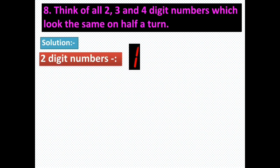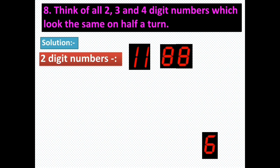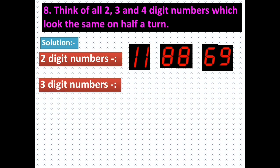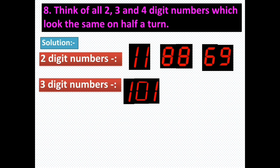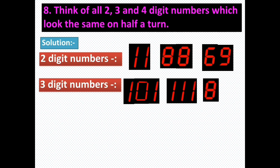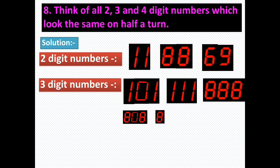2-digit numbers: 11, 18, 88, 69. 3-digit numbers: 101, 111, 818, 808, 881, 888, 161, 619. These are the numbers that look the same after a half turn.